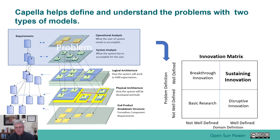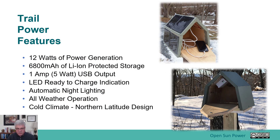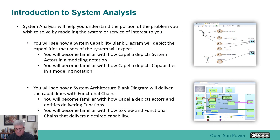We're going to define what part of that big problem we are specifically going to address. The problem before had to do with charging and having remote charging capability. We're at the system analysis phase of how this product came to life. In the system analysis phase, we're going to talk about two different types of primary diagrams. One is called the system capability diagram — its goal is to help you become familiar with how Capella depicts system actors and modeling notation, and also helps depict the capabilities the system has to deliver. This differs from the operational capability because now it's narrowed down to what the system — in this case, the charger — has to do.